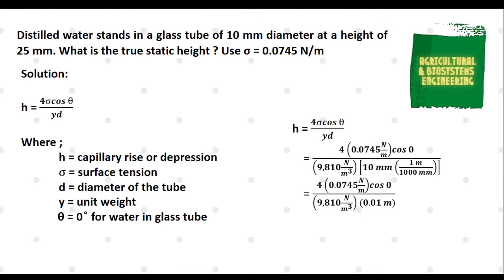We simply solve and we have 4 times 0.0745 N/m multiplied to cosine 0, all over 9810 N/m³ multiplied to the converted diameter of 0.01 m. We now have 0.298 N/m all over 98.1 N/m². The unit N/m will be cancelled out together with the 1 meter unit. The only left unit is 1 meter. We have now a final value for our capillary rise to be 0.003 meters.